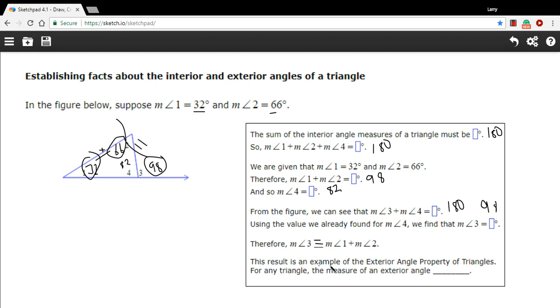All right. The result is an example of the exterior angle property of triangles. For any triangle, the measure of an exterior angle is the sum of those other two angles. So that is a little bit of work with interior and exterior angles of a triangle.